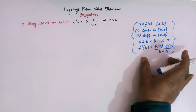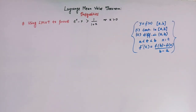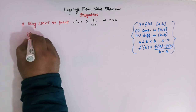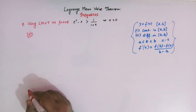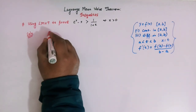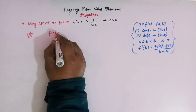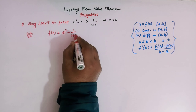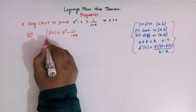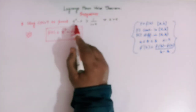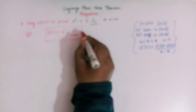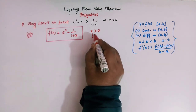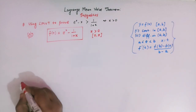Let us use this theorem to prove this inequality. To prove it, we first frame a function. We take f(x) = e^x minus 1 over (1 + x). This is our function, and here x is greater than 0, so we take the interval [0, x].